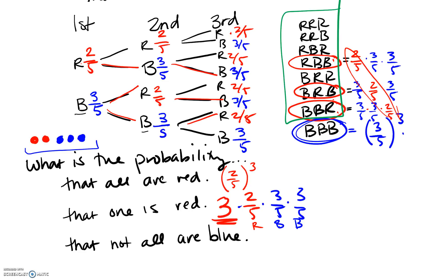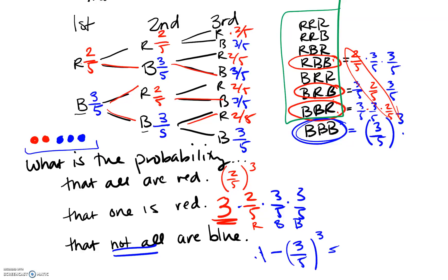Not all being blue is still like we were talking about before: one minus the probability of all blue. So that hopefully gives you a brief introduction to probability sampling with and without replacement, and helps you with that question that tends to be hard on the homework.